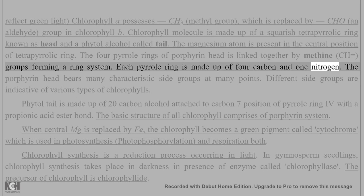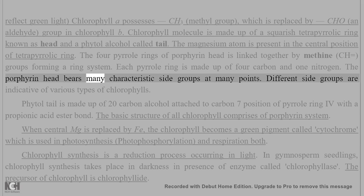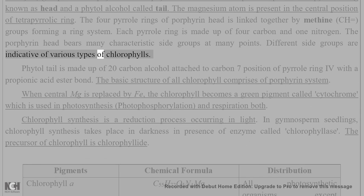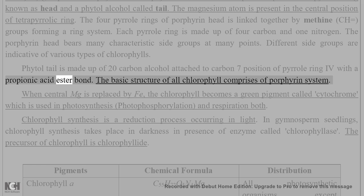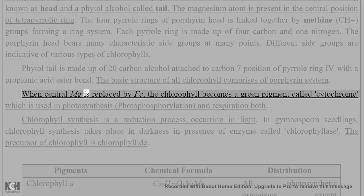Each pyrrole ring is made up of four carbon atoms and one nitrogen. The porphyrin head bears many characteristic side groups at various points. Different side groups are indicative of various types of chlorophylls. The phytol tail is made up of a 20-carbon alcohol attached to the carbon-7 position of pyrrole ring four with a propionic acid ester bond.